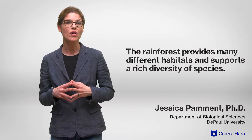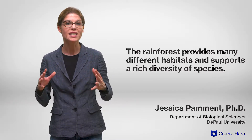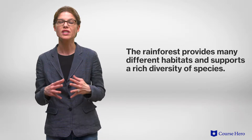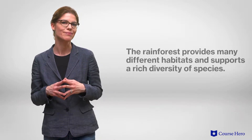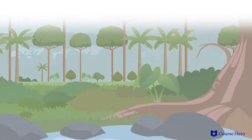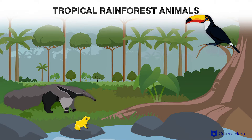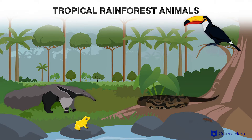The layered structure of tropical rainforests provides many different habitats and therefore a rich diversity of species. For example, in a square kilometer of tropical rainforests in Central America, toucans, poison dart frogs, anteaters, boas, and bullet ants may be found.